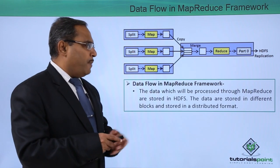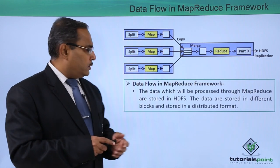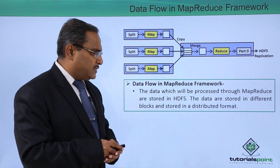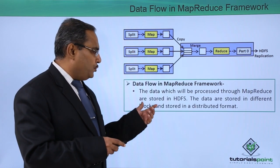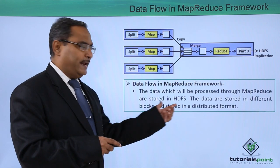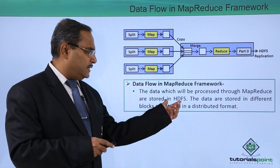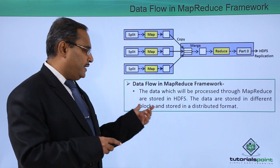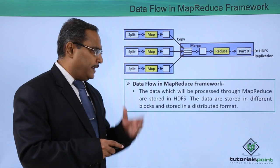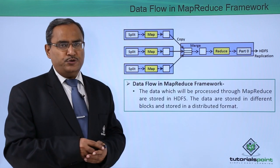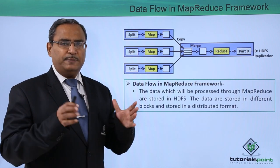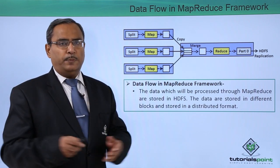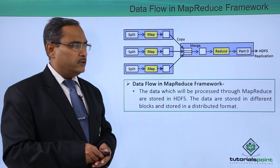So, data flow in the MapReduce framework: the data which will be processed through MapReduce are stored in HDFS, and the data are stored in different blocks in a distributed format. This means the data will be stored across multiple commodity hardware nodes.